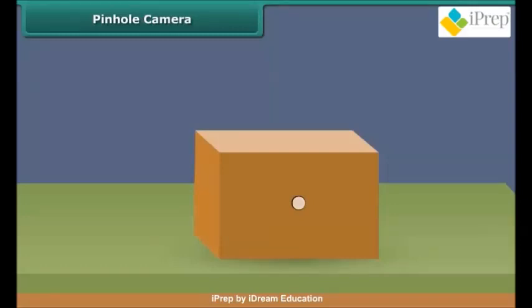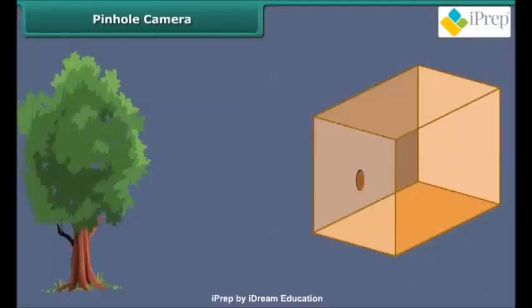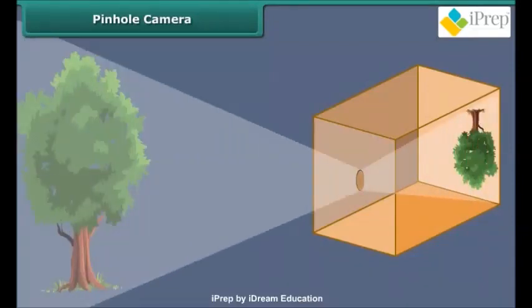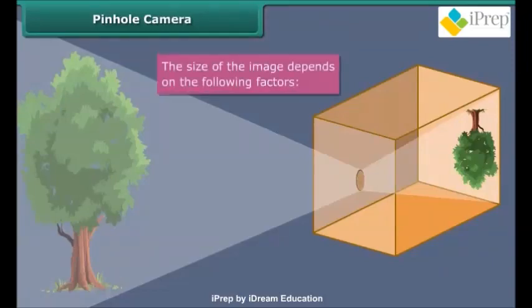Close the box from all sides — the pinhole camera is ready to use. Make the pinhole face a lighted object. An image of the object is formed on the tracing paper. The size of the image depends on the following factors.